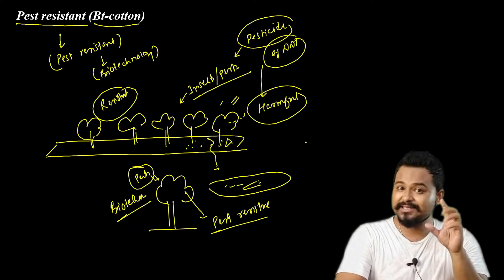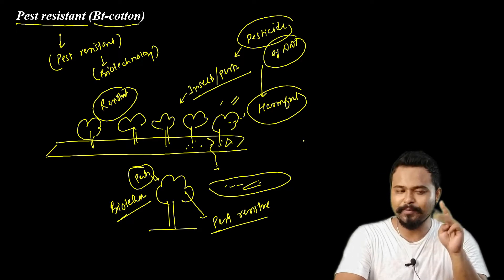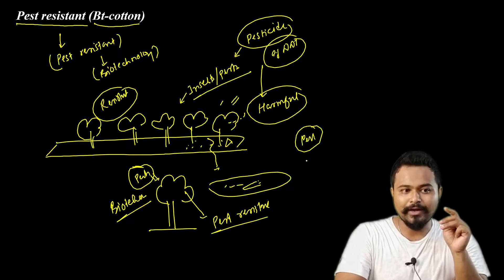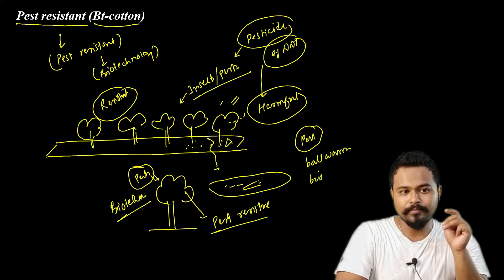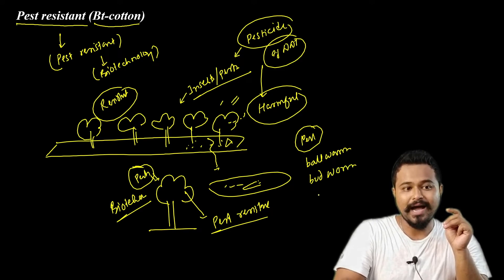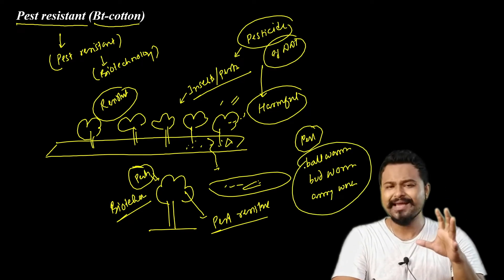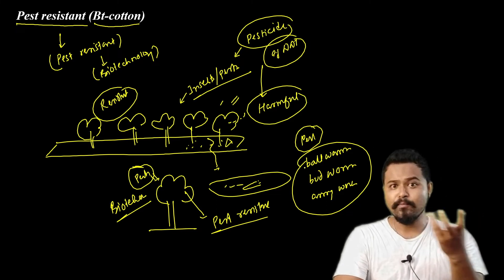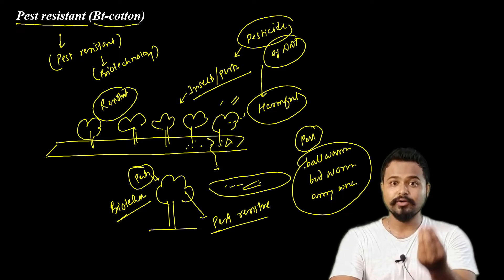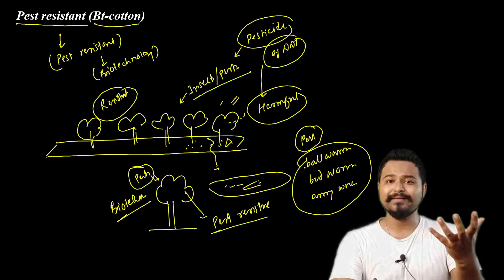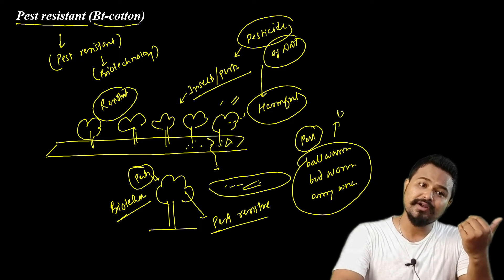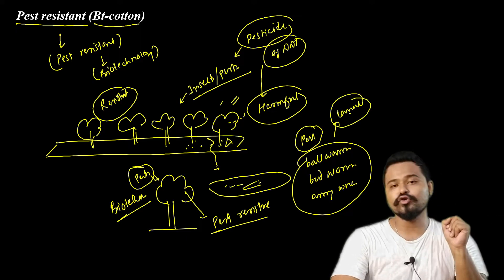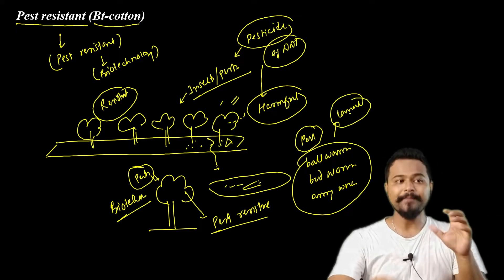There are three main classes of pests that can affect cotton: ball worm, army worm, and similar worms. There are also various types of flies, bugs, and different kinds of larvae — all of these affect the cotton plant.